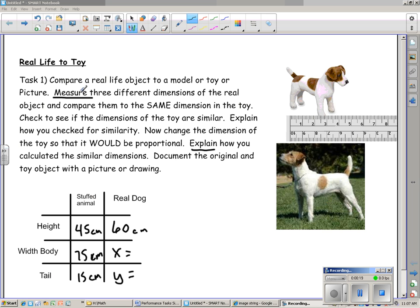You're going to measure three different dimensions—maybe measure the length, the height, the length of the tail, or a foot. You're going to put all the numbers in the chart, and then you're going to see if it's proportional.